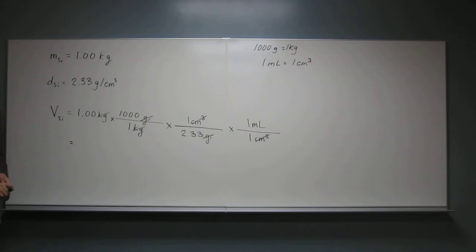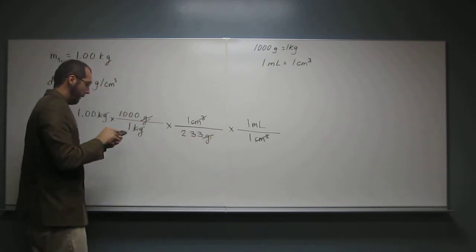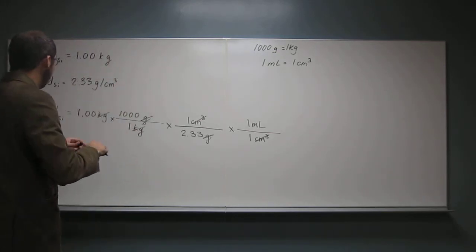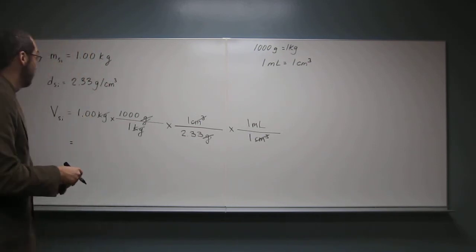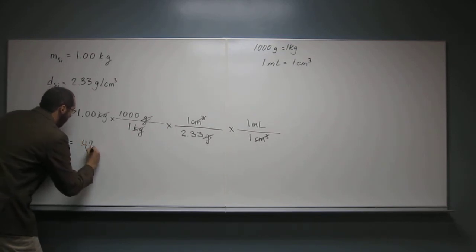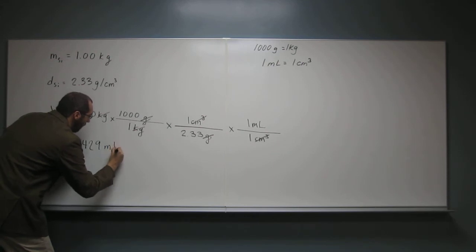And now all we have to do is use our calculator. The one thing I forgot to bring in here was... Okay, so 1 times 1,000, of course, is going to be 1,000, times 1 is still going to be 1,000, times 1 is going to be 1,000, and then you're just going to divide 1,000 by 2.33. And you get it. And you want it to 3 significant figures, remember, okay? So in this case, it's going to be 429 milliliters.